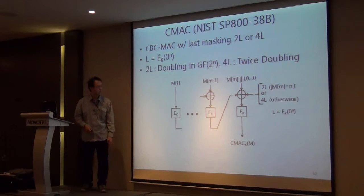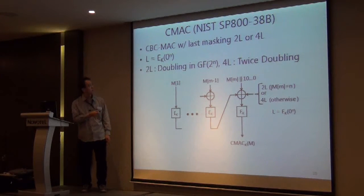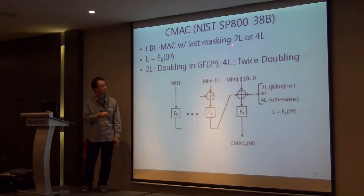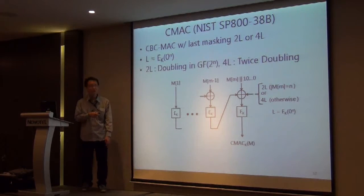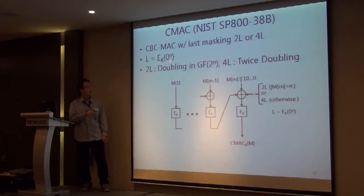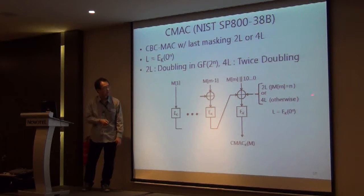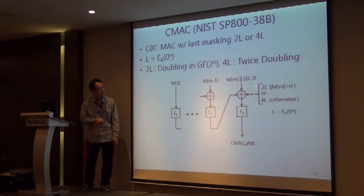Let me briefly describe the original CMAC, which is a NIST standard. It is a CBC-MAC with additional last-block masking using 2L or 4L, where L means the encryption of the all-zero N-bit string, 2L means the doubling of L in GF(2^N), and 4L means doubling twice. These masking values are used depending on the nature of the last block.